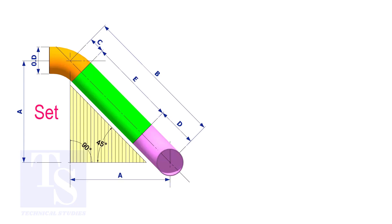In an offset, if the including angle is 45 degree, the set and the run shall be the same. If the value of the set and the run are equal, the value of the travel is set or the run multiplied by 1.414.